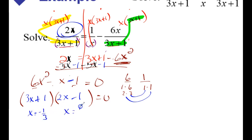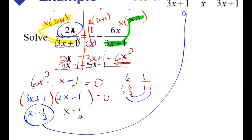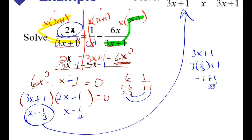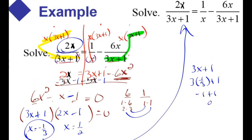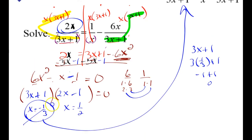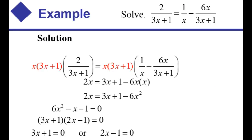Remember, you need to check these solutions. I'm not a fan of the negative 1 third, because if you try to plug that into the denominator, you'll get negative 1 plus 1, which is 0, and you cannot divide by 0. So this is called an extraneous solution — you just discard that, and the only solution is x equals 1 half.